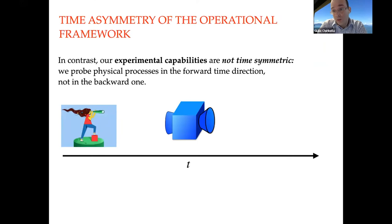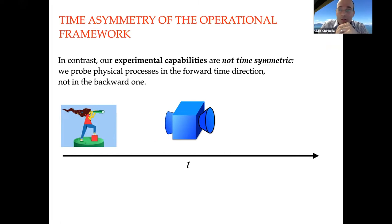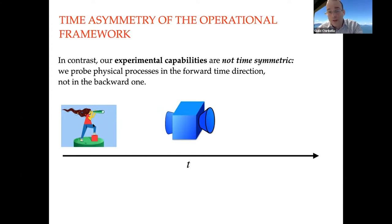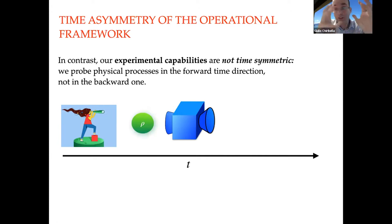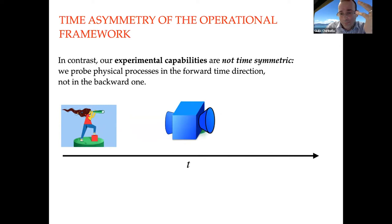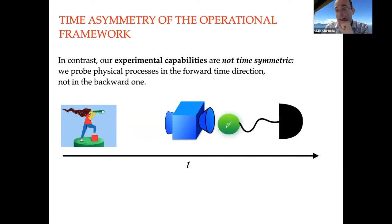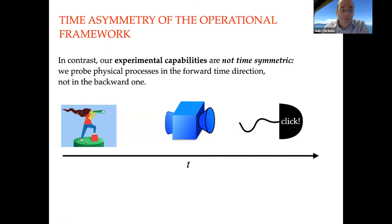The problem is that we do care about the direction of time. We as agents are very much time asymmetric in many senses. The professional way to say this is that our experimental capability seems not to be time symmetric: the way we probe physical processes is forward in time, not backward. An agent operates from left to right in time, initializing the system in some state — a density matrix rho — sending it through a device, and measuring the output.